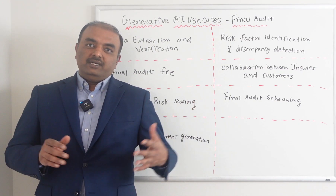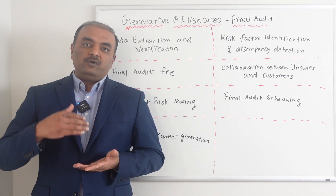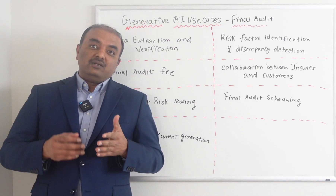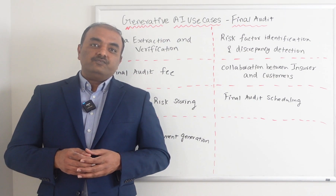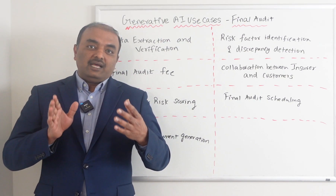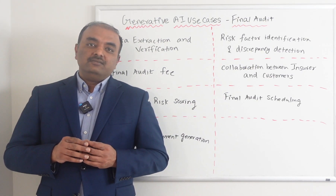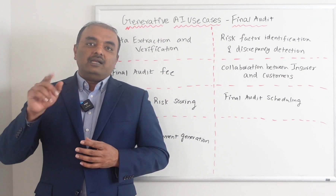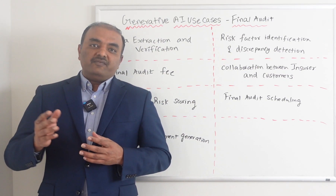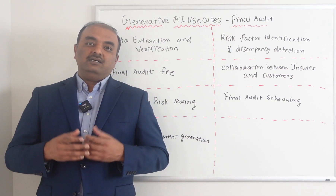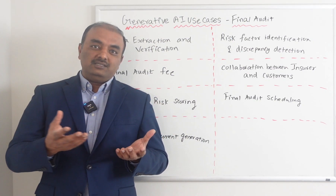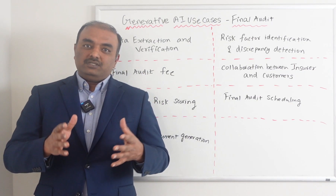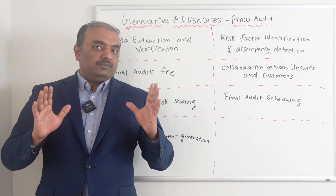Now at the end of one year, those software engineers can be promoted to directors, so their salary increases from $300k to $350k. During Final Audit, the insurance company gathers the actual payroll — that's the $350k — and calculates the premium. If the premium difference is say $1,000, the insurance company sends an invoice for an additional $1,000 to make sure the policy is covering the actual exposure. This is the overall concept.